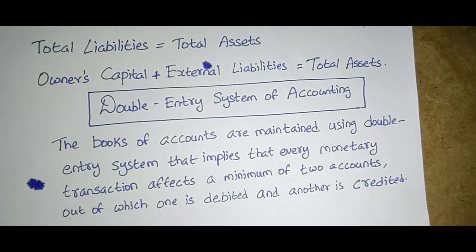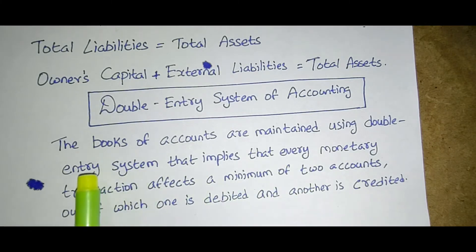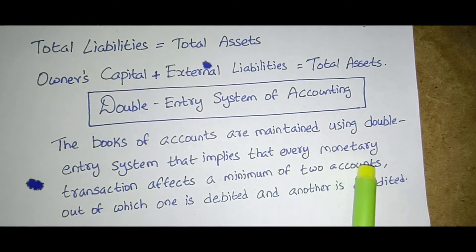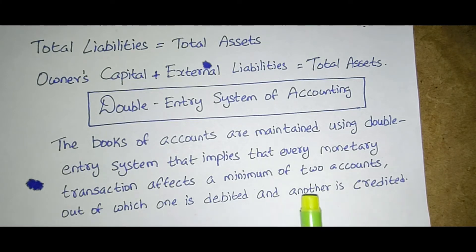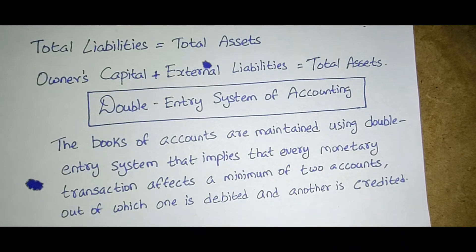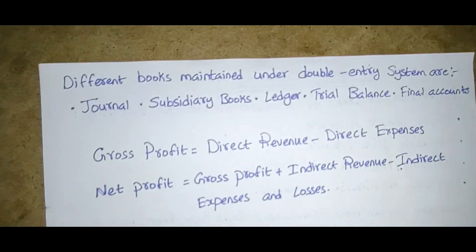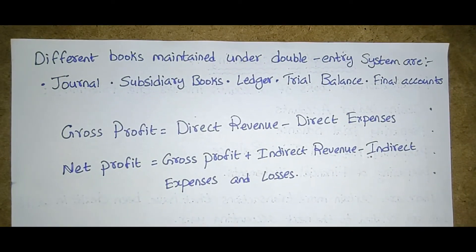Next we will discuss the double entry system of accounting. If you get a theory question regarding double entry system or concept of accounting, write these terms step by step to get good marks. The books of accounts are maintained using double entry system, which implies that every monetary transaction affects a minimum of two accounts — one is debited and the other is credited.